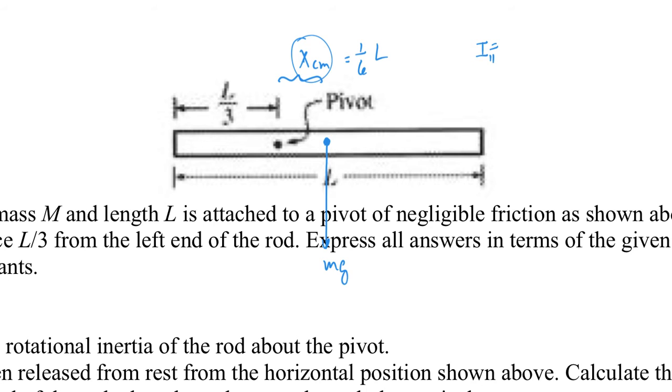All right this is the parallel axis theorem. So I'm gonna start with one-twelfth ML squared and I'm gonna add to it M times one-sixth L squared. We're moving it one-sixth of L. We're moving it from the center to where this pivot point is. The ML squared comes out front and I get one-twelfth plus one-thirty-sixth. I think we can get common denominators there of 36. So three-thirty-sixths and one-thirty-sixth.